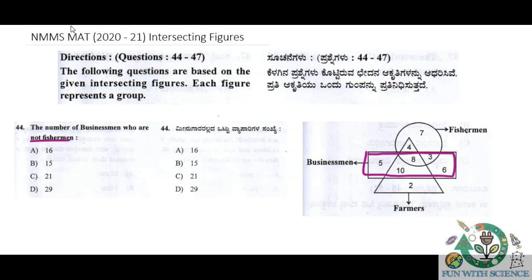Since the fisherman is in the circle, we can delete the circle part. So the number of businessmen who are not fishermen is 5 plus 10 plus 6. The total is 10 plus 6 equals 16, and 16 plus 5 equals 21. So the number of businessmen who are not fishermen is 21 — that is option C.